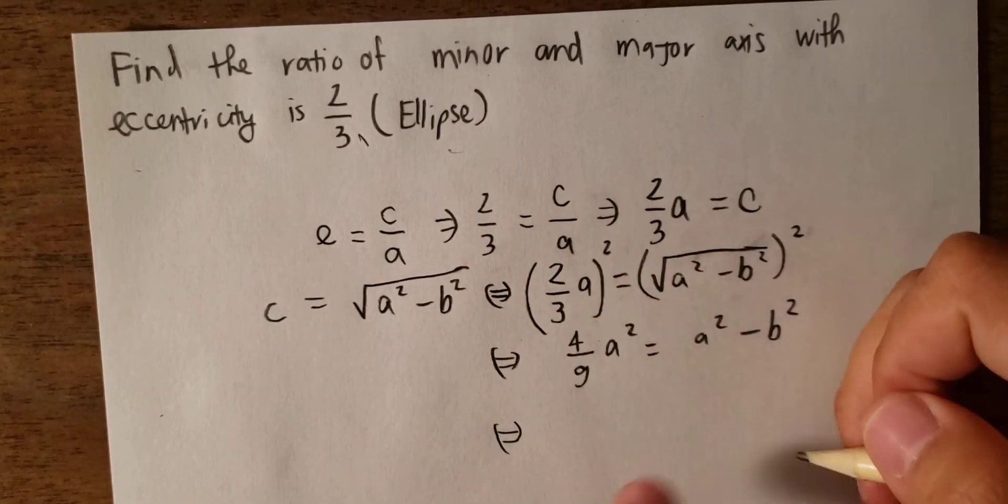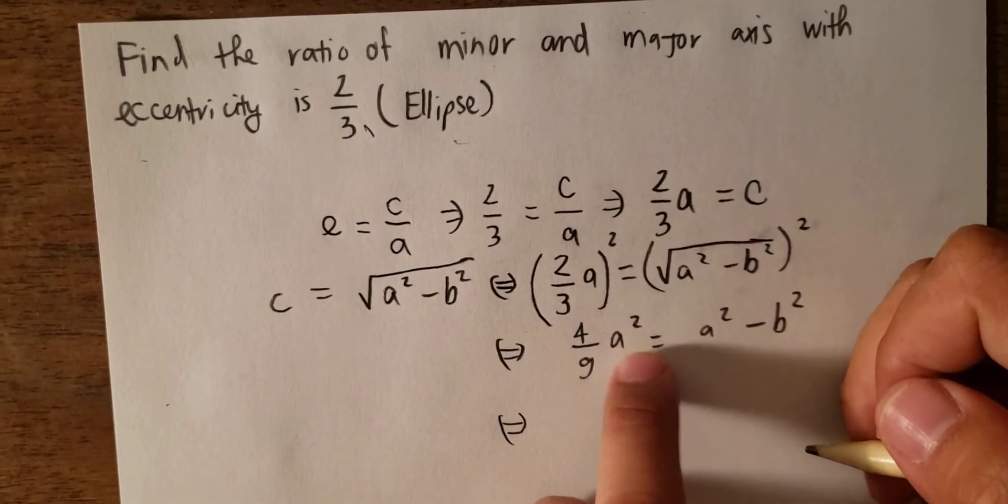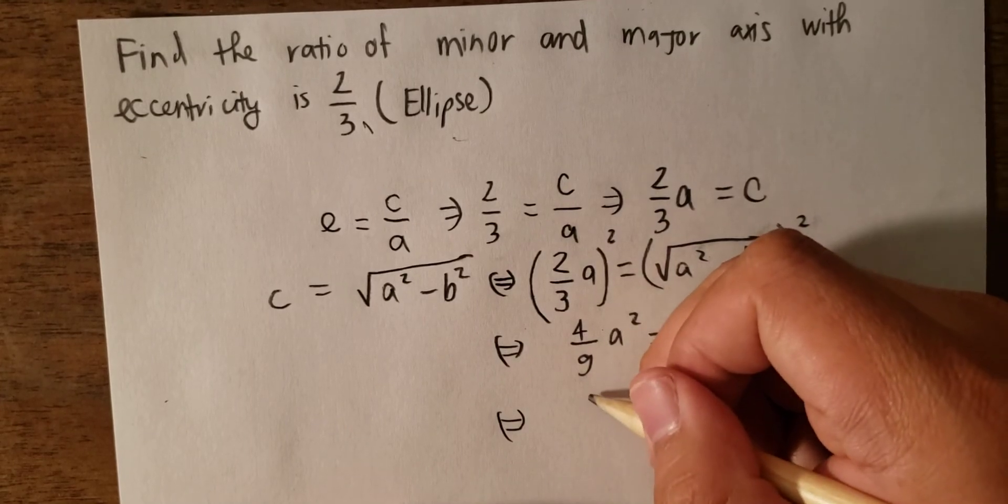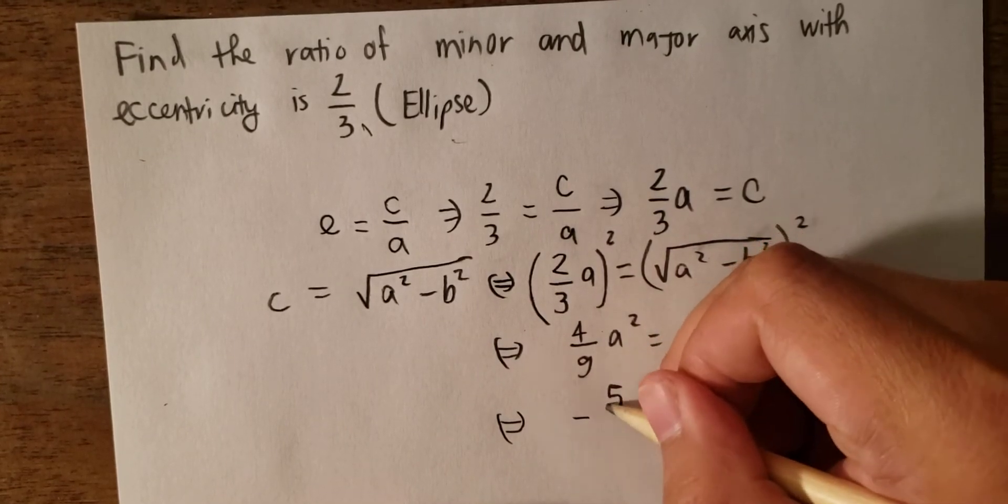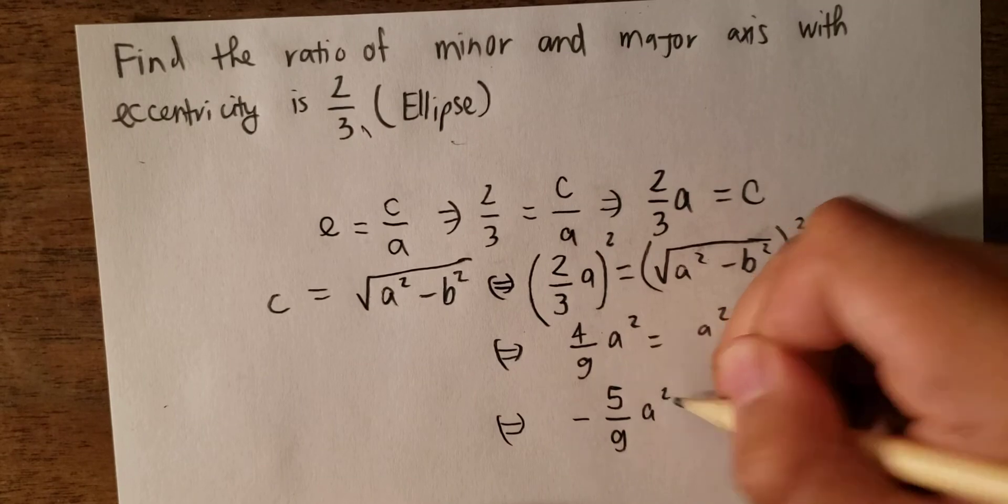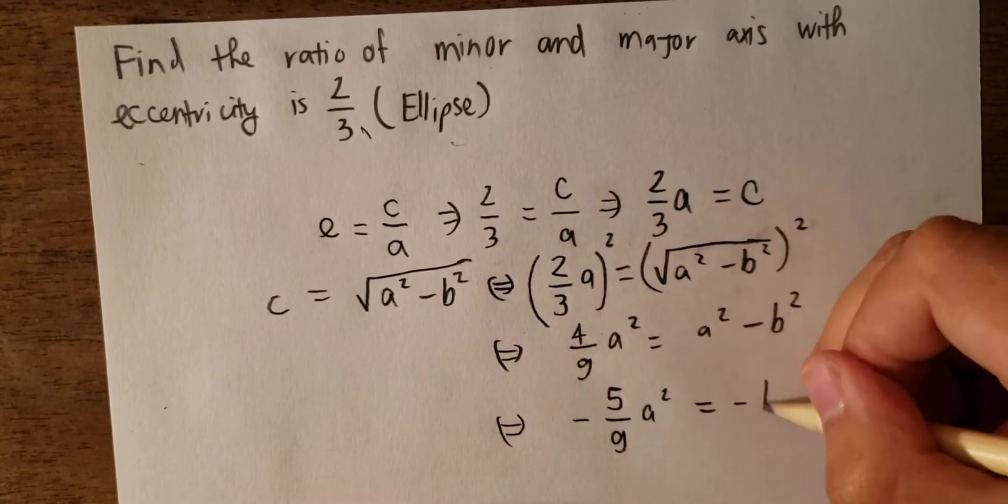And now we move a power 2 on this one and you get about minus 5 over 9 a power 2 and minus b power 2.